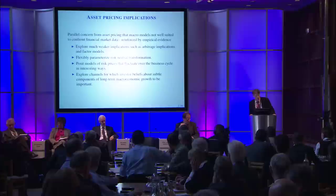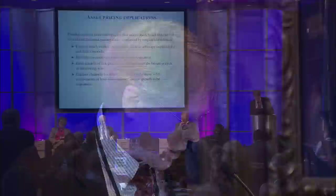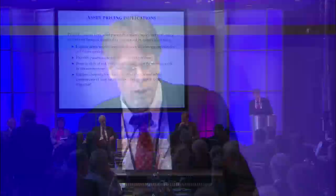The same set of theoretical tools were used to build asset pricing models. There's a parallel concern from the asset pricing literature that these macro models were not well suited to confront financial market data. There are multiple responses in the empirical literature: one is to explore much weaker implications, such as arbitrage implications and factor models — for example, the so-called Arbitrage Pricing Model of Ross and others. Another strategy was to flexibly parameterize so-called risk-neutral transformations. As Markus Brunnermeier talked about yesterday, in asset pricing there are cash flow channels and the stochastic discount factor channel — a lot of the economics gets thrown into the stochastic discount factor channel, and that was pretty much parameterized away.